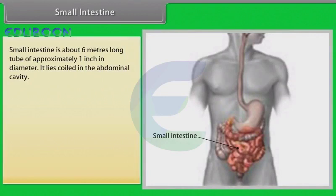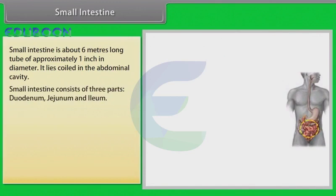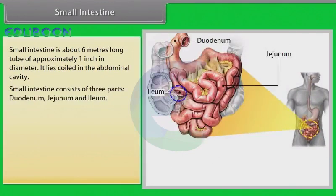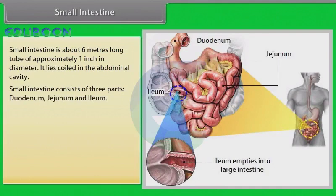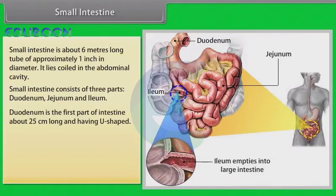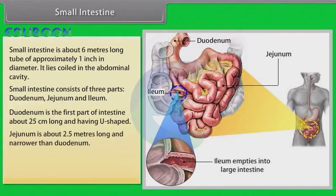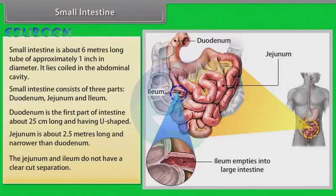The small intestine is about 6 meters long and approximately 1 inch in diameter, lying coiled in the abdominal cavity. It consists of three parts: the duodenum, the jejunum, and the ileum. The duodenum is the first part, about 25 centimeters long and U-shaped. The jejunum is about 2.5 meters long and narrower than the duodenum. The jejunum and ileum do not have a clear-cut separation.